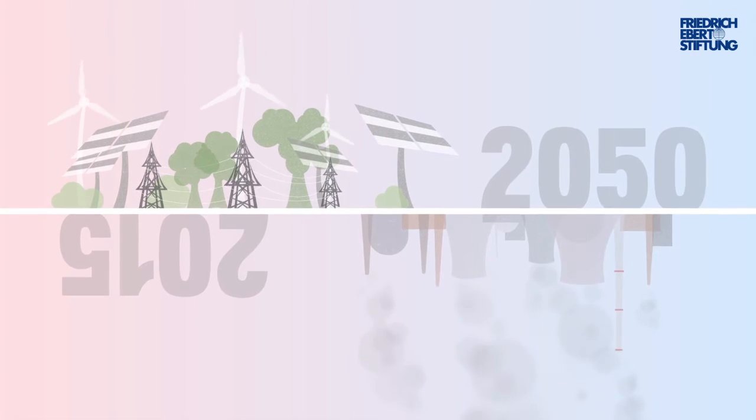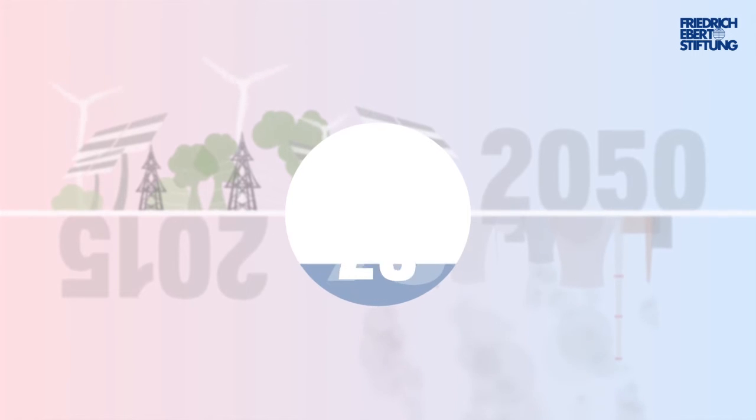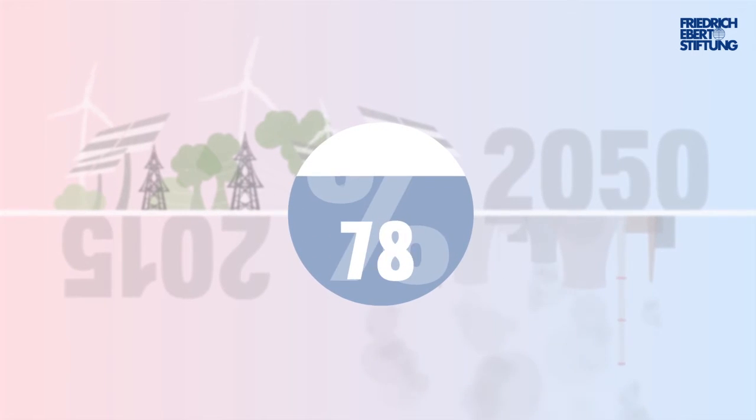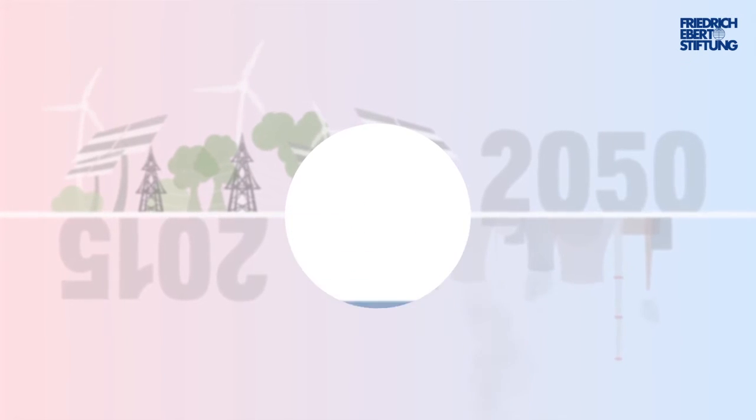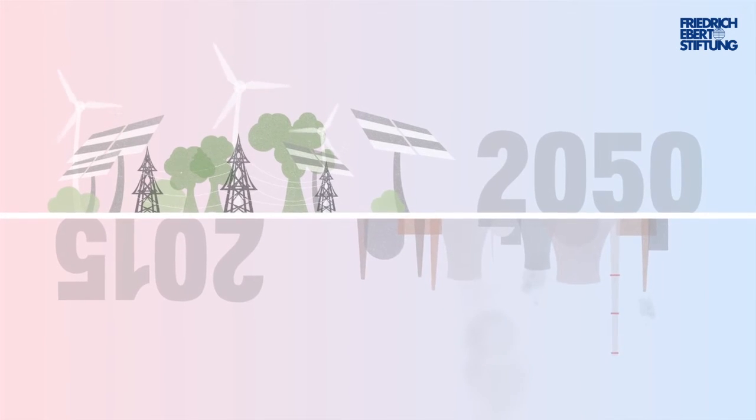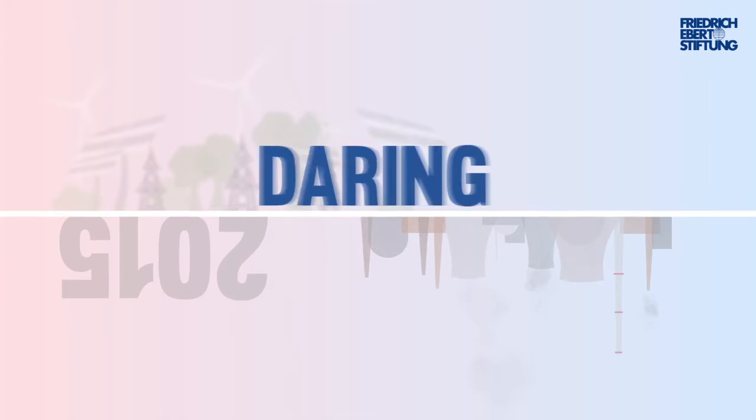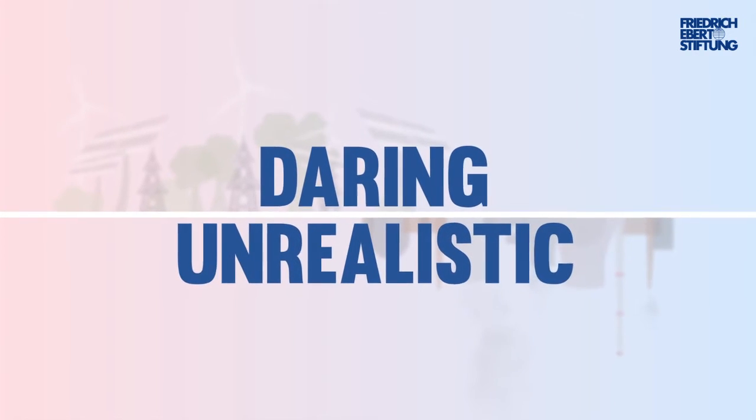by the middle of the 21st century, 80% of our energy should come from renewable sources, energy consumption should fall by 50%, and greenhouse gases should be reduced to somewhere around the 1990 level. Is this daring and unrealistic?